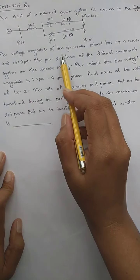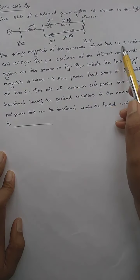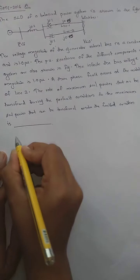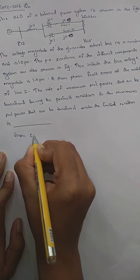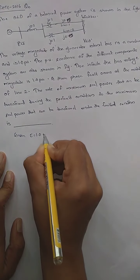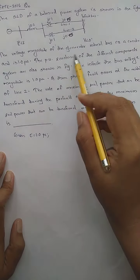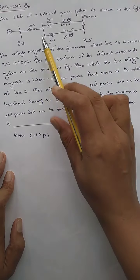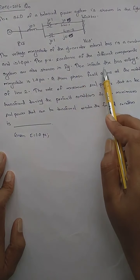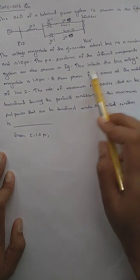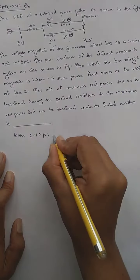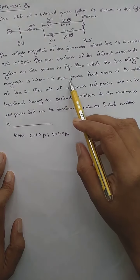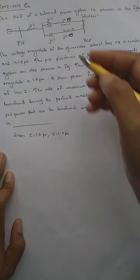The voltage magnitude of the generator internal bus is constant and is 1 per unit, so E equals 1 per unit. The per unit reactances of the different components are shown. The infinite bus voltage magnitude is also 1 per unit, that is V equals 1 per unit. A three-phase fault occurs at the middle of line 2.